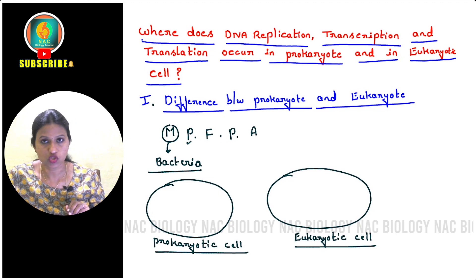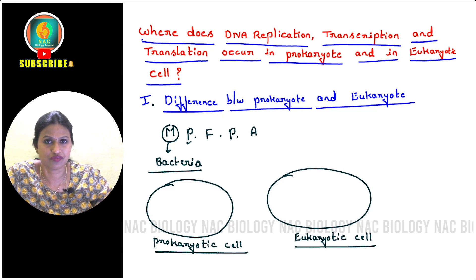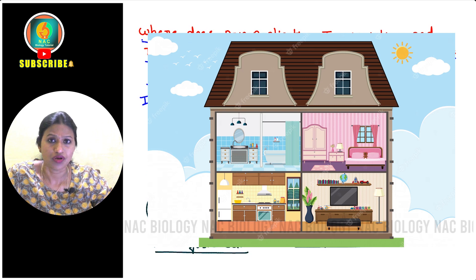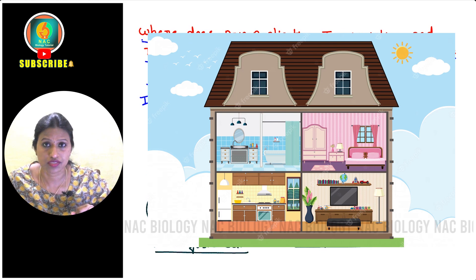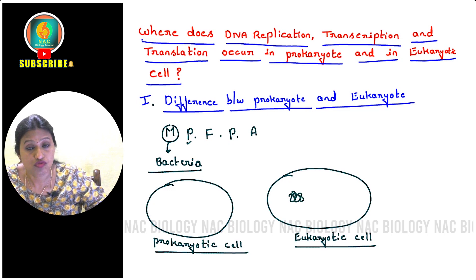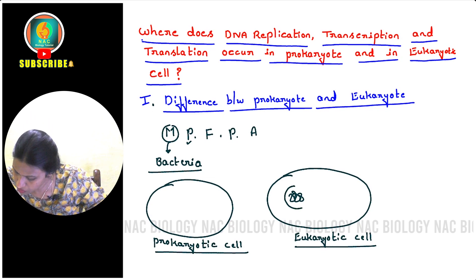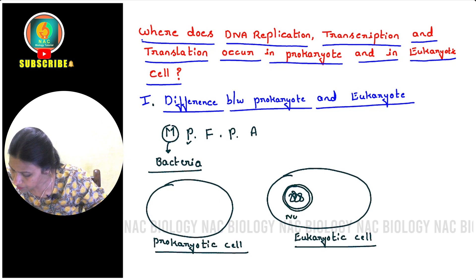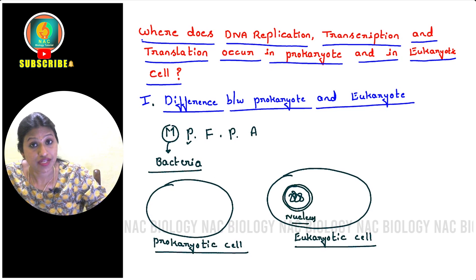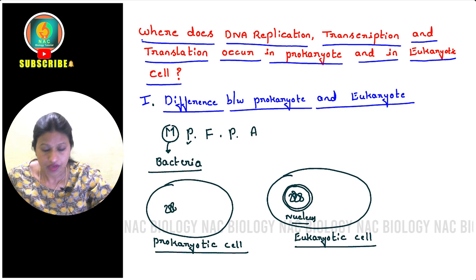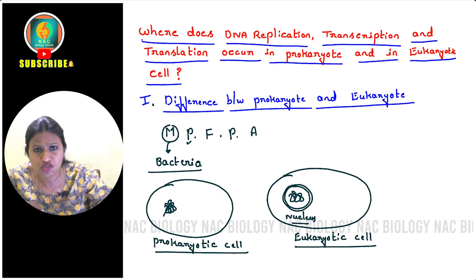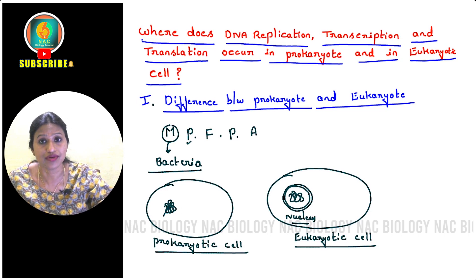The membrane-bound organelles are absent in prokaryotic cells. Whereas in a eukaryotic cell — just like a normal house with separate kitchen, bedroom, and dining hall, each with its own partition — if I say there is a chromosome present within the nucleus, the nucleus has a separate membrane surrounding it. That is why we can call it a separate organelle. In a prokaryotic cell, the chromosome just lies within the cytoplasm itself, because there is no membrane to define a nucleus.